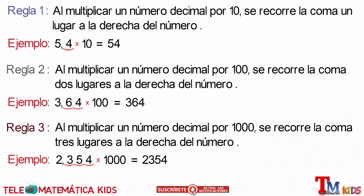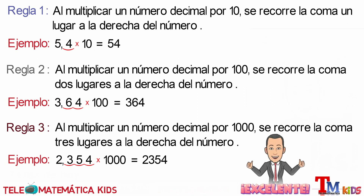And this way, these three simple rules are applied. Very good, I hope you have understood the subject. Here's our video about multiplication of decimal numbers by 10, 100 and 1000 respectively, as part of the course of rational numbers.